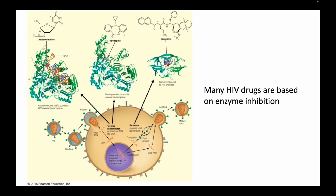As a quick example, this diagram shows the life cycle of HIV, where the virus binds the host cell, releases its viral RNA, transcribes it into DNA, gets the host cell to make proteins, and then has to cleave those proteins to form a functional new virus. Key enzymes include reverse transcriptase, which synthesizes RNA into DNA, and a protease that cuts the viral protein. The drugs shown here are all enzyme inhibitors targeting different steps in this process.